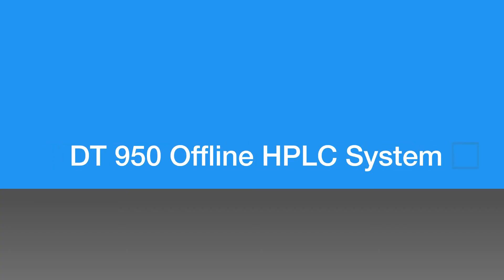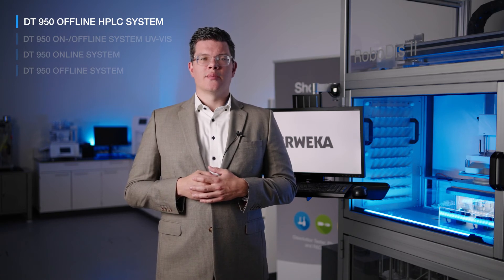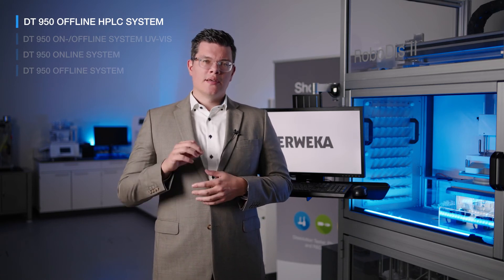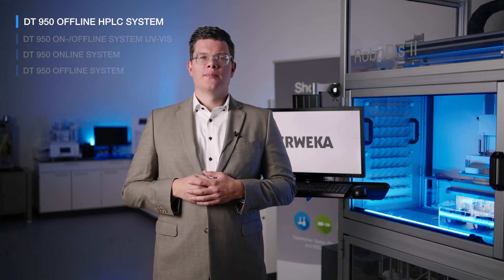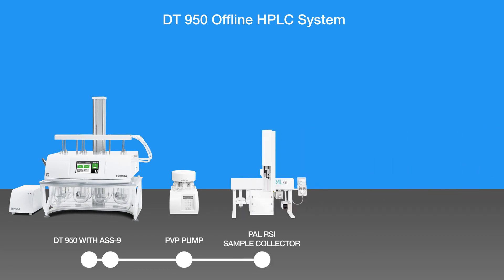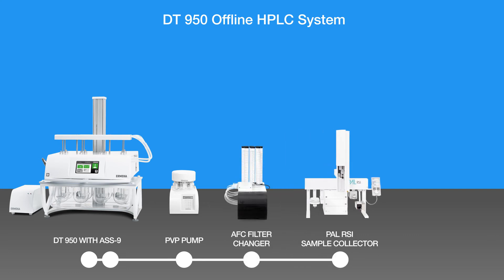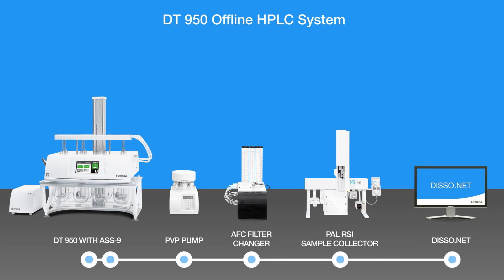The dissolution offline HPLC system is similar to our standard dissolution offline system. It is not connected to the analytic device and does automatic sample collection, but specifically for HPLC. The sample collection is done via a PAL-RSI autosampler, which offers a variety of options from different vials to cooled racks. For secondary filtration, the system can be configured with an automated filter changer. Our dissolution HPLC offline system is of course controlled by our disso.net.